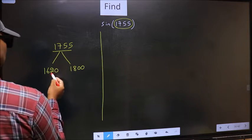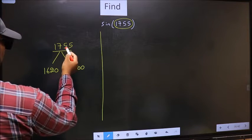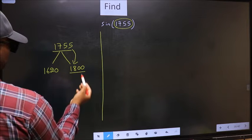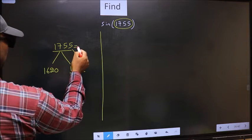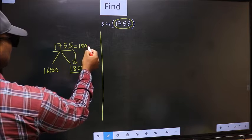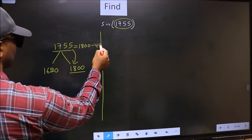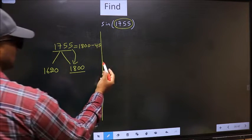Now this number is close to which number? This is close to 1800. So now this should be written as 1800 minus 45. So this will become sign.